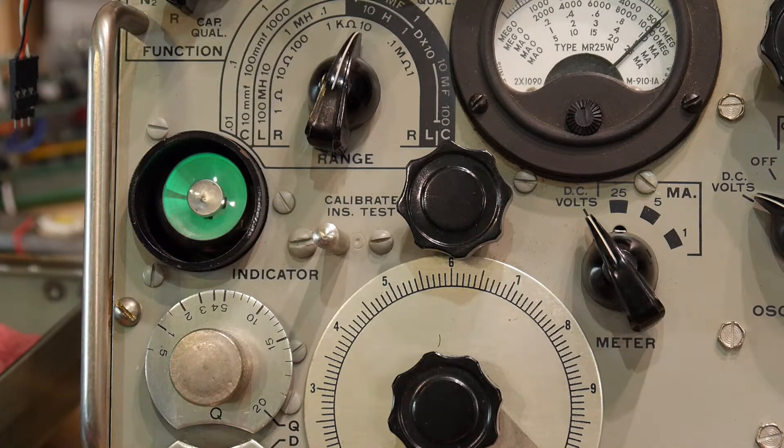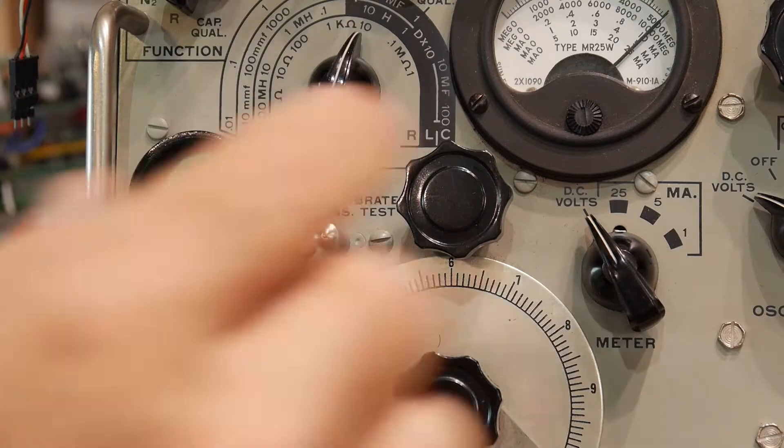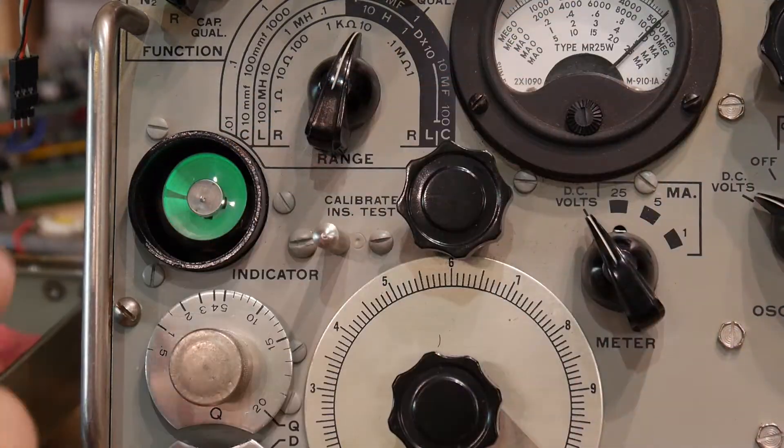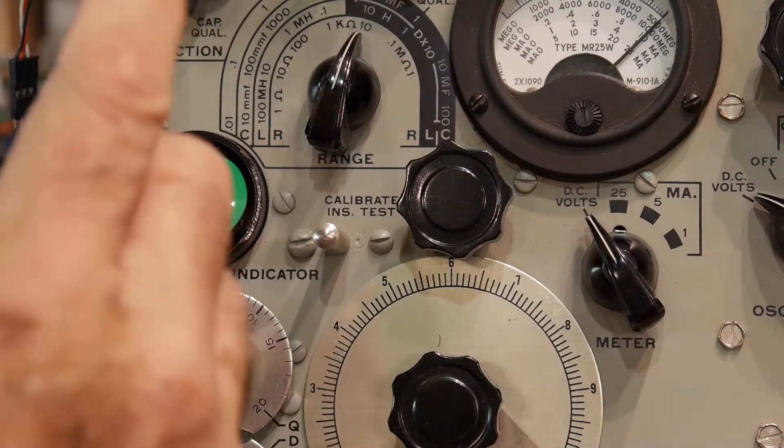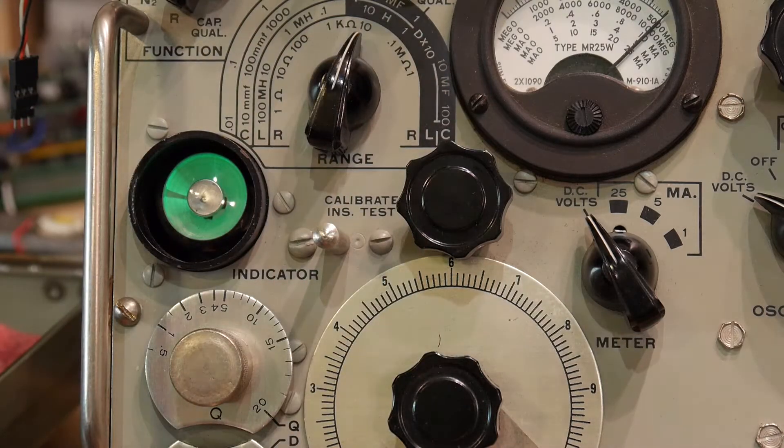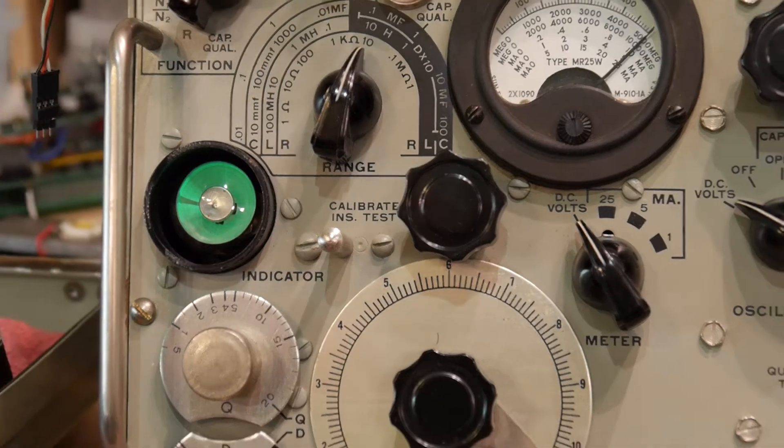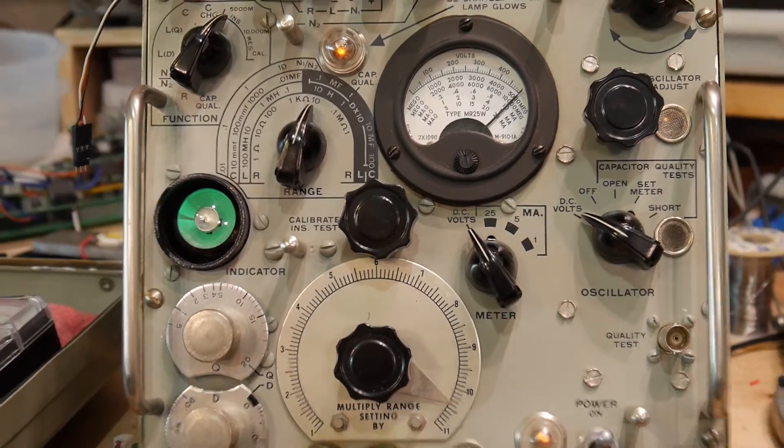And then what it says to do is to lower the voltage until you get the same condition where the eye tube just goes down. So we're going to go over here to the voltage.